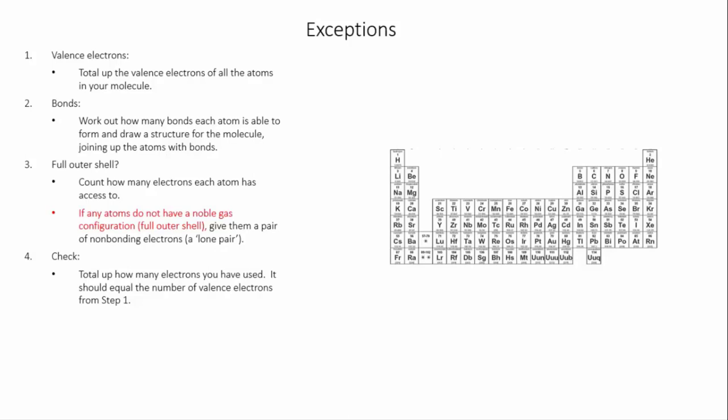So the first exception is this. If you have a structure that has beryllium or boron in, these are known as electron deficient atoms, which means they don't have to have a full octet. They don't need to have eight electrons in their outer shell. Beryllium typically forms two bonds and boron typically forms three and they don't need any extra electrons.